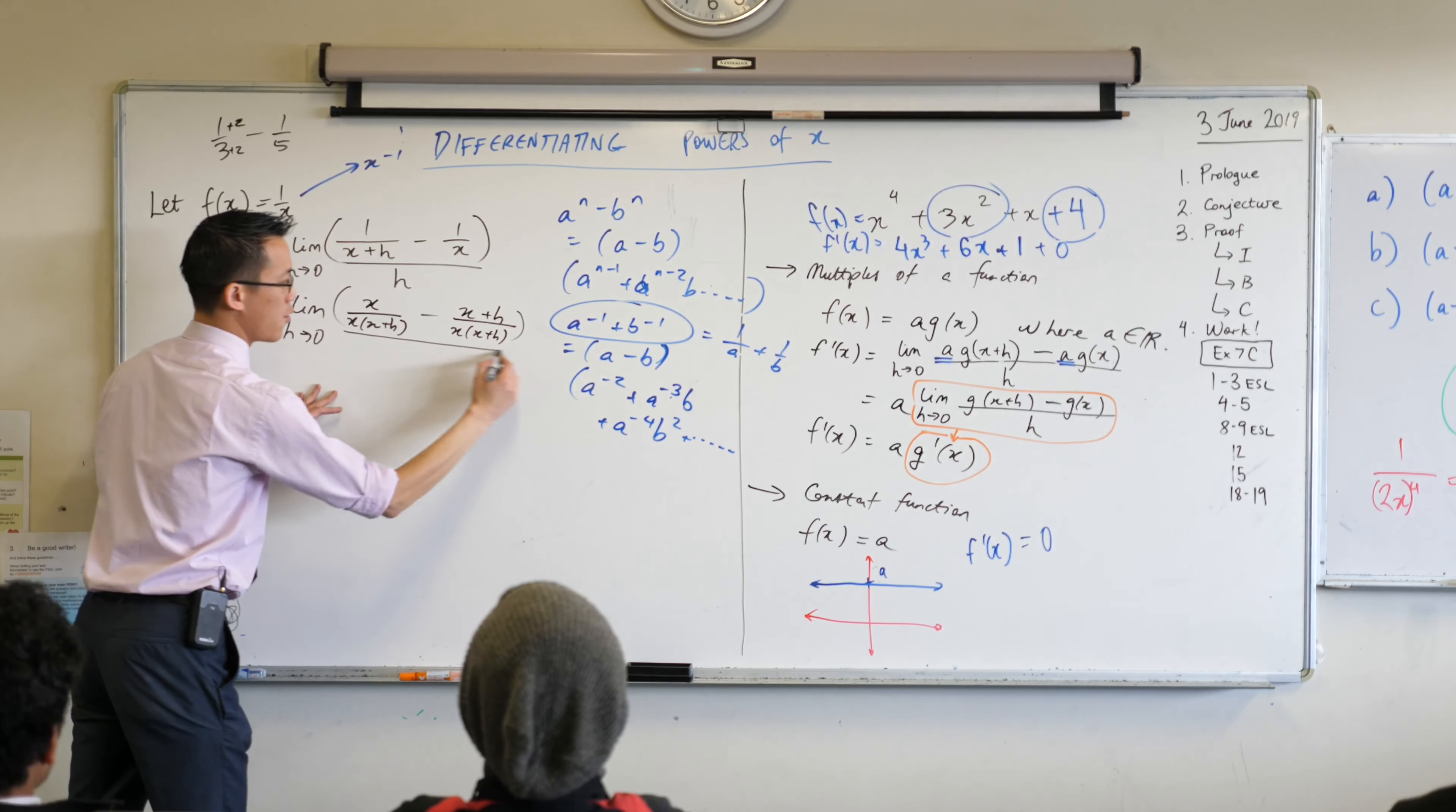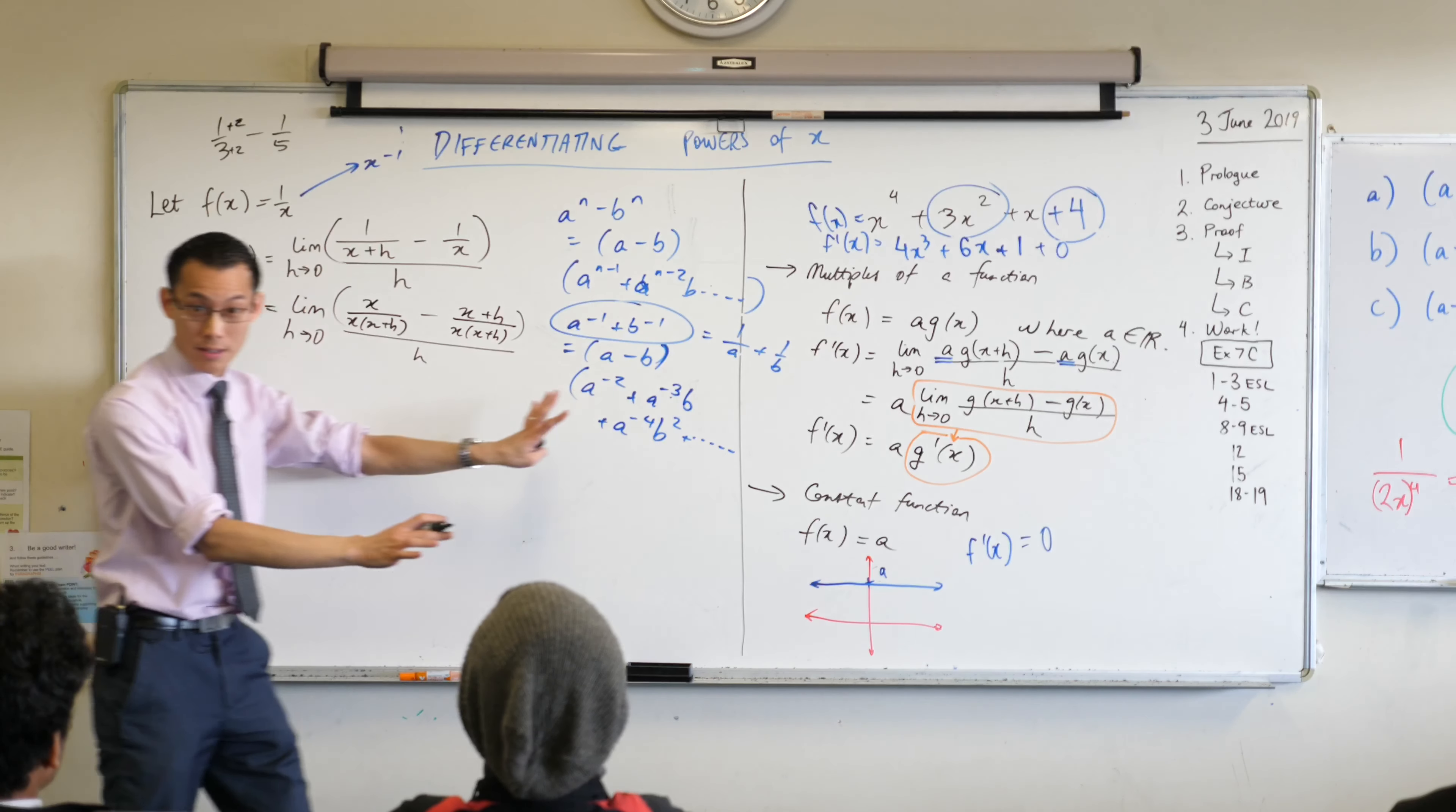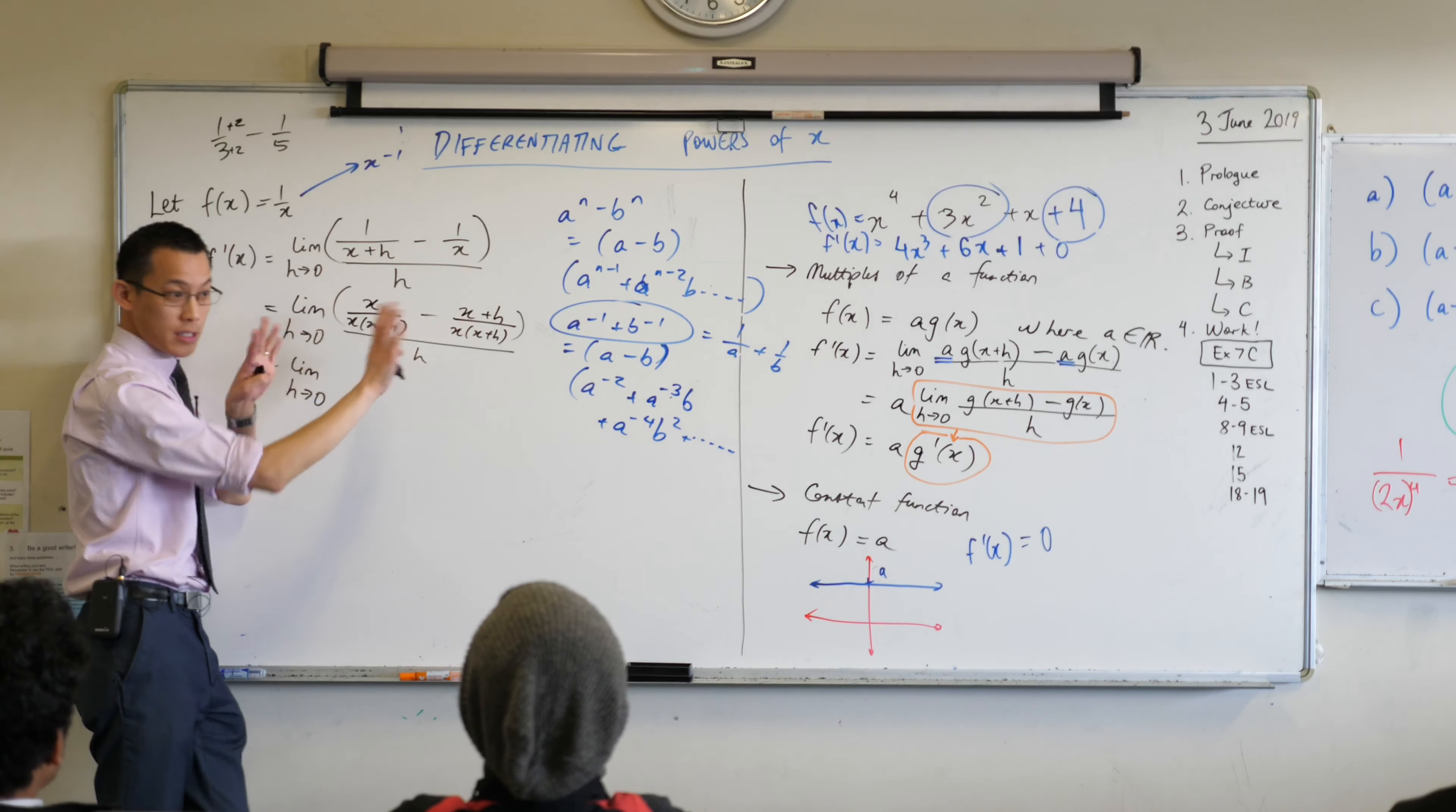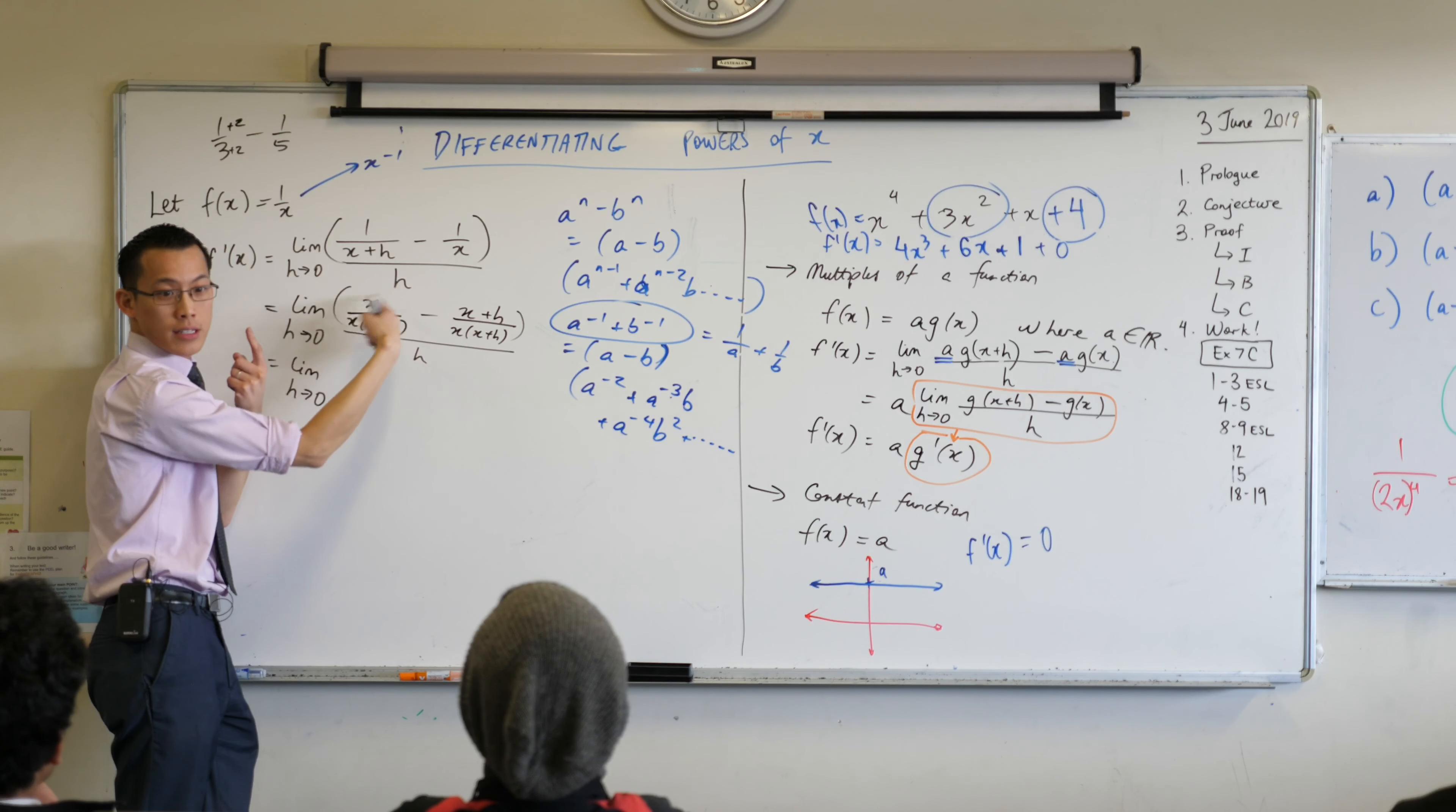And all of that is over h. Okay, it looks gross, that's okay. We've seen things go gross and then they pan out at the end. Okay, so let's have a look. Limit comes out the front, common denominators that's fine. So what happens when I - I think x take away x, so how many x's are left on the numerator?